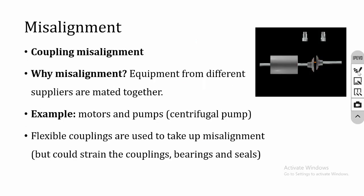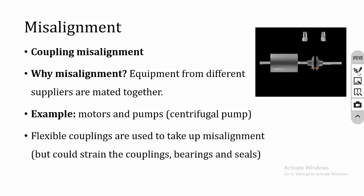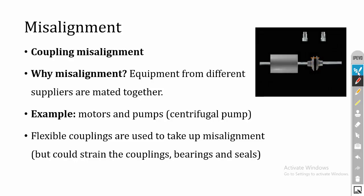The second machinery fault is misalignment. In general, pump shafts are fitted to motors using a coupling. If both shaft axes are not collinear, it will produce misalignment, and this misalignment will vibrate the system. You can see in the animation that both shafts are parallel but not collinear. The reason for misalignment is that different machines are purchased from different suppliers and are not uniform. For example, a pump from one supplier and a motor from another — we fix the shafts using a coupling, and if they are not perfect, that produces misalignment.